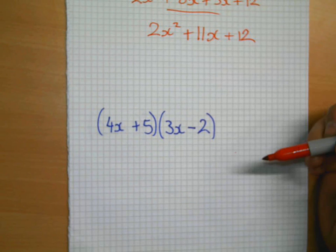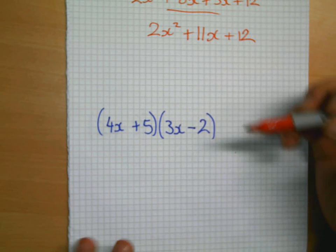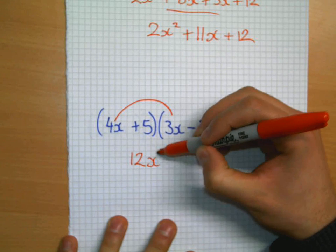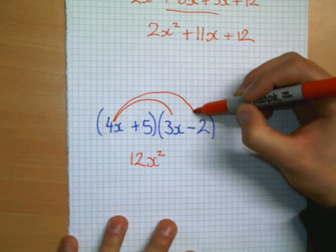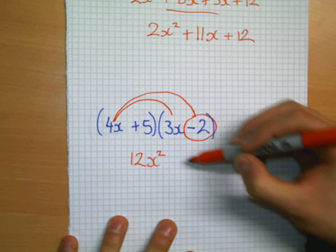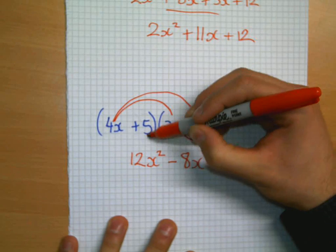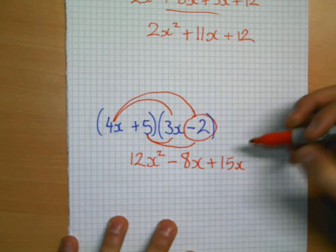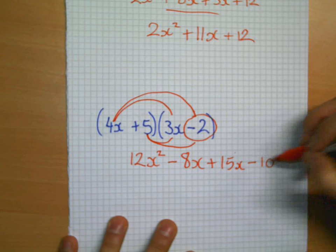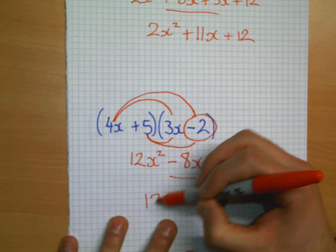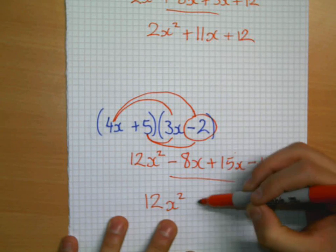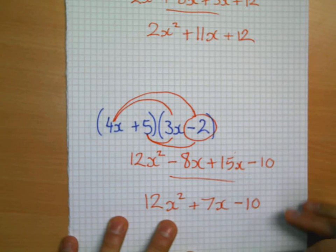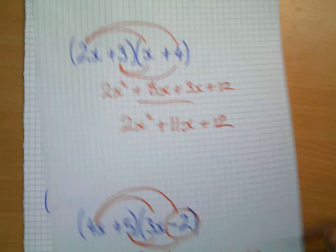Here, this time, 2 coefficients here which aren't 1 and a negative. Much more difficult. But still, the exact same process. 4x times by 3x, 12x squared. 4x times by minus 2, minus 8x. 5 times by 3x, positive 15x. 5 times by minus 2, minus 10. Collecting like terms, we get 12x squared, positive 7x, and minus 10.